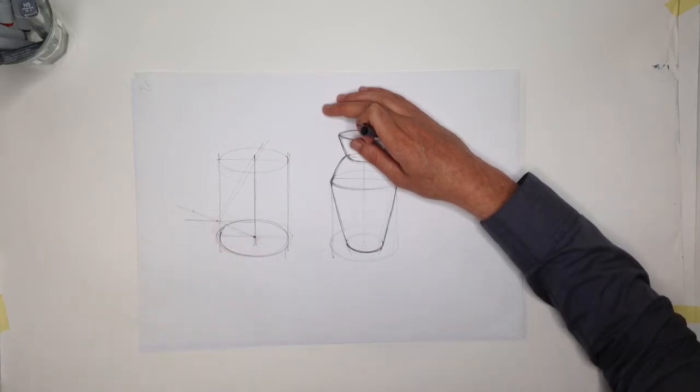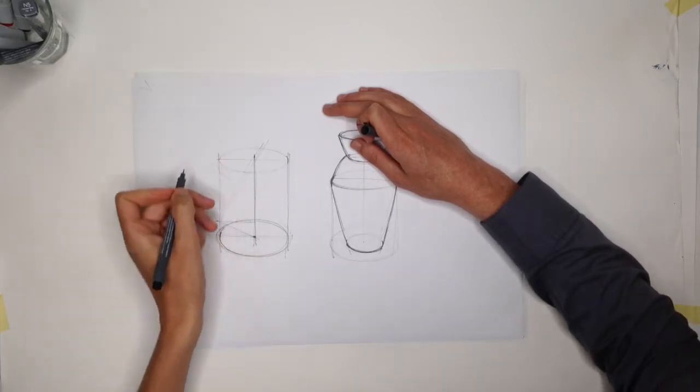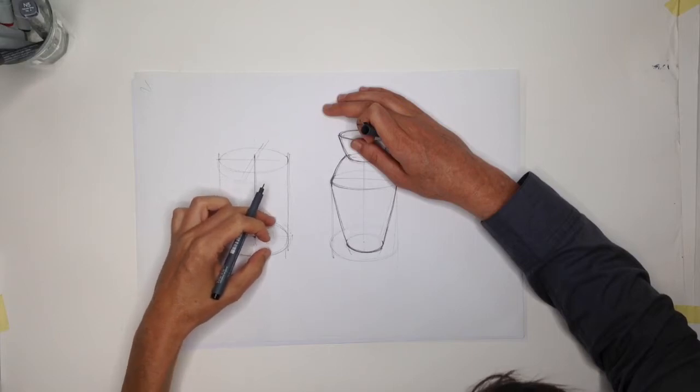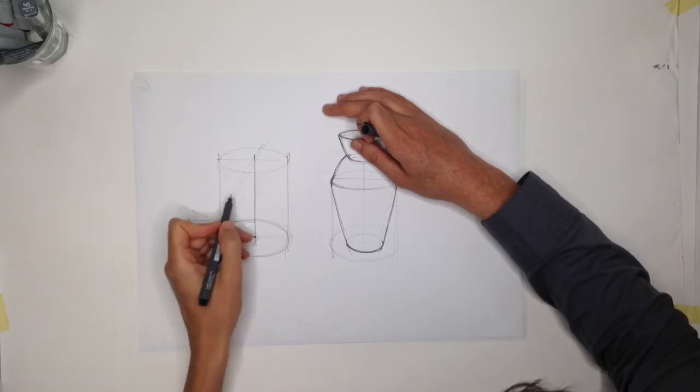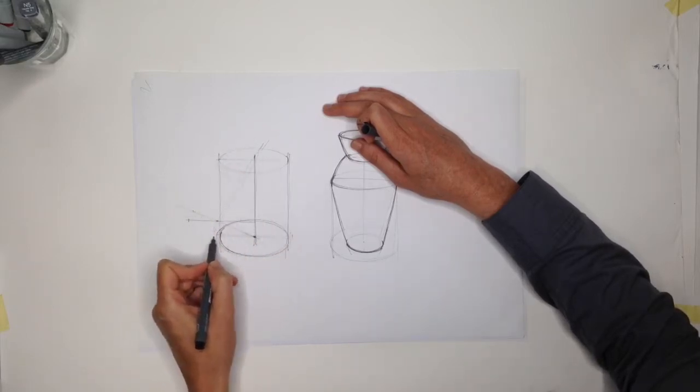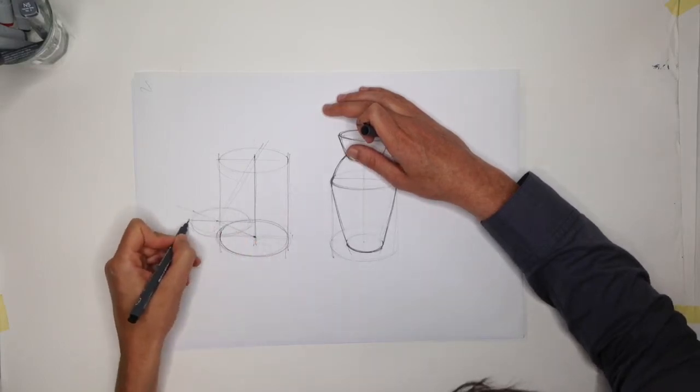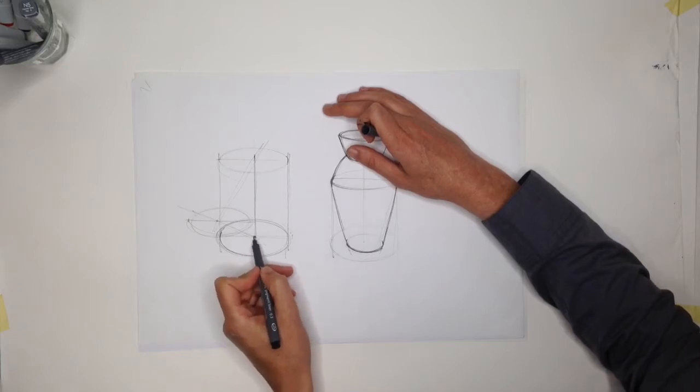Now the most important thing here is that you draw your ellipse with the same roundness as the ground plane, because remember this is a circle, and you draw it around that line.